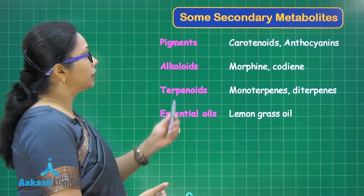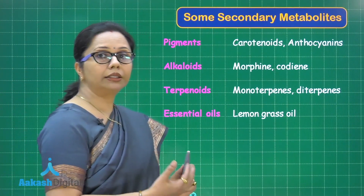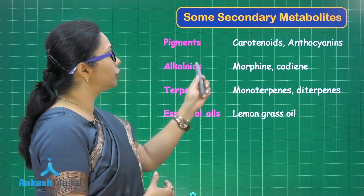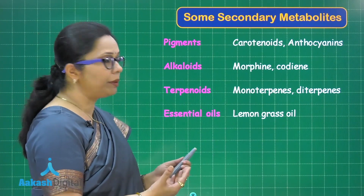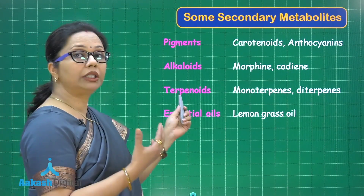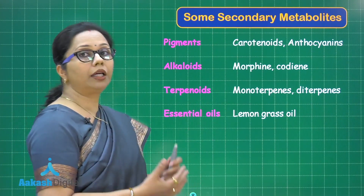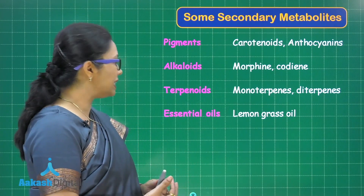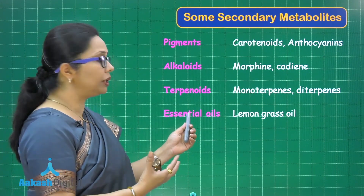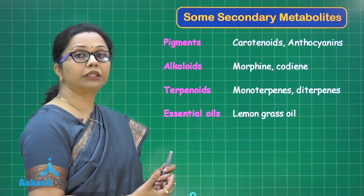Some examples of secondary metabolites: pigments such as carotenoids, which are orangish-yellow, and anthocyanins, which are reddish as seen in beetroot. Alkaloids are bitter in taste — morphine is extracted from the poppy plant and used as an analgesic in post-operative cases. Terpenoids are lipid-like substances such as turpentine oil, containing chemicals called terpenes — monoterpenes or diterpenes. Essential oils are fragrant, like lemongrass oil, also called citronella, which is used as a mosquito repellent.